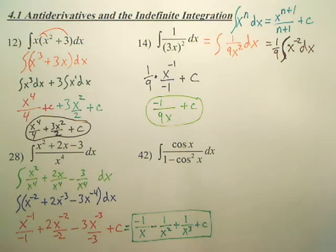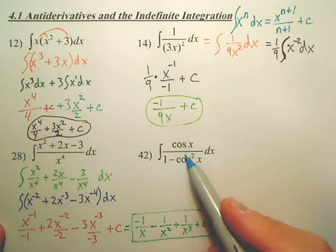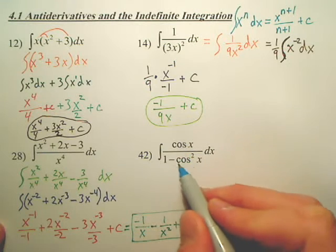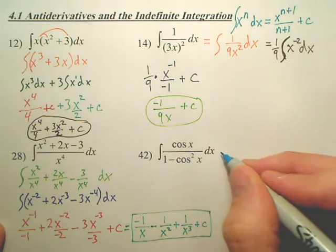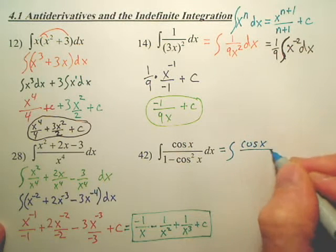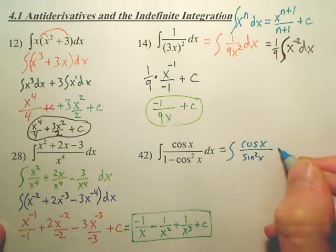The next one, that's freaky. There's no division property, but watch this. What can I rewrite this as? You can rewrite this as cosine x over, actually, it's sine squared x.